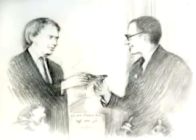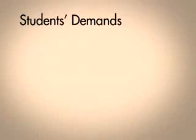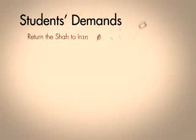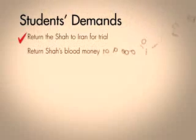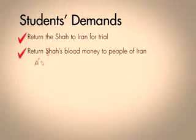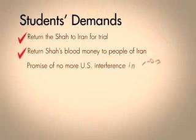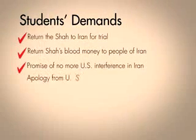Iran and the U.S. had an extradition treaty in force that obligated the Carter administration to return the Shah to Iran as an indicted criminal. The students had four demands: return the Shah to Iran for trial — he had been accepted into America for medical treatment — return the Shah's wealth to the Iranian people, a promise from the U.S. not to interfere in Iran's affairs in the future, and an apology and admission of guilt by the U.S. for its past actions in Iran.